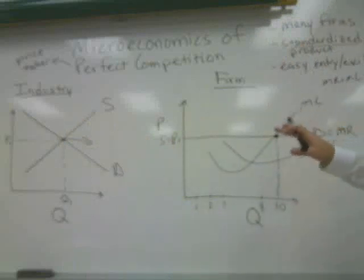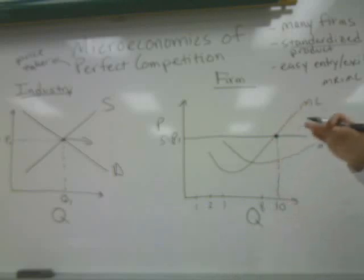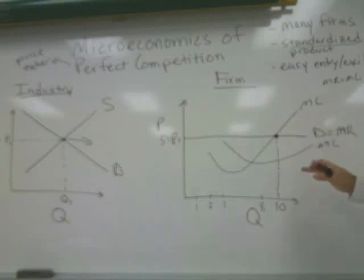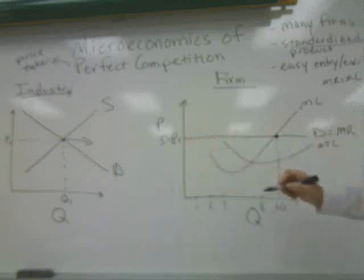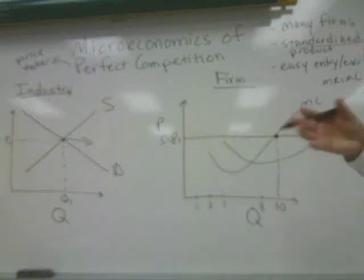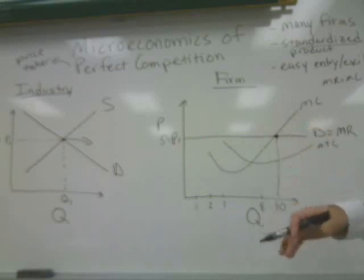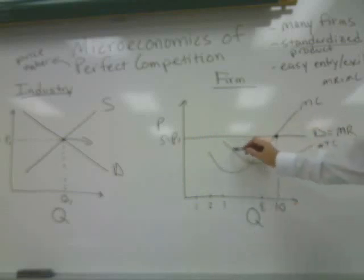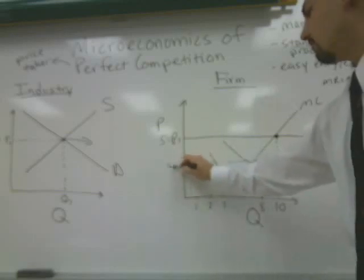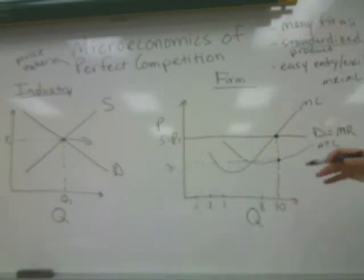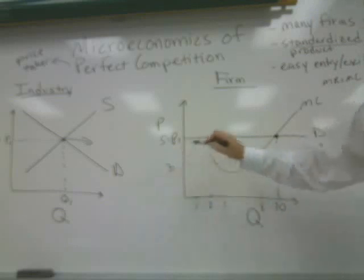This picture represents the short run in a perfectly competitive market, because we can see that this firm is earning an economic profit. If it sells 10 units at $5 per unit, we need to determine the cost of producing those 10 units by going down to the average total cost curve. The average total cost at 10 units is, let's say, $3 — so on a per-unit basis, it is costing the firm $3 to produce.